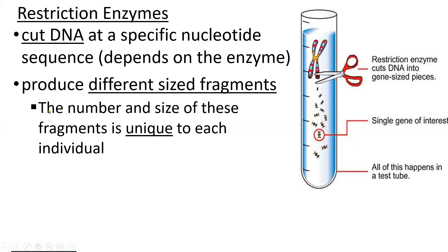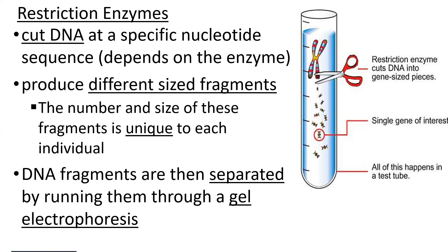Once we have these different-sized fragments, we can compare them to another person's fragments. The number and size of your fragments are different from mine — we have different amounts of repeats, these little repetitive pieces of nucleotide in between our functional genes. To compare them, we separate and sort them into a banding pattern produced by gel electrophoresis. We load these DNA fragments — chopped up by restriction enzymes — into a gel electrophoresis chamber, then turn on electricity to separate them by size.